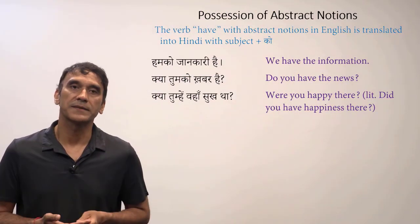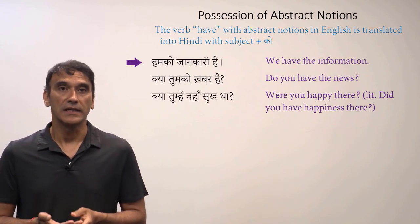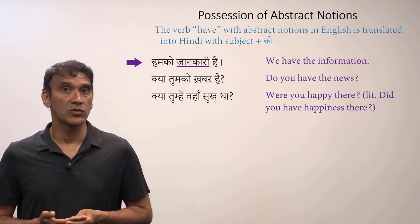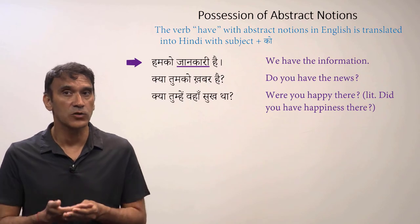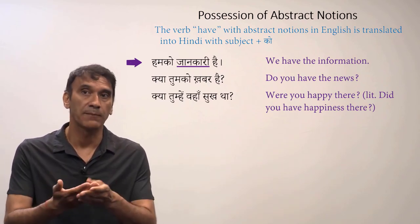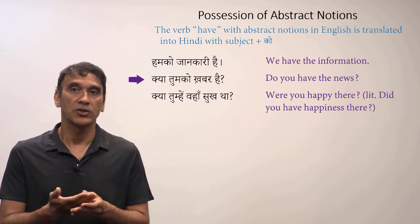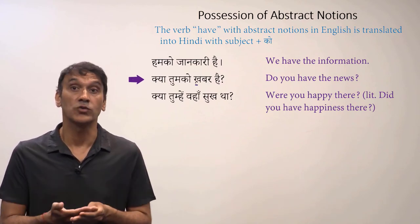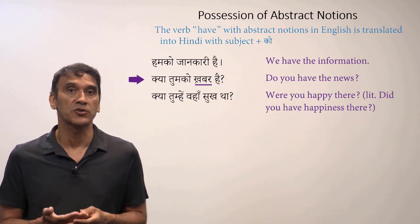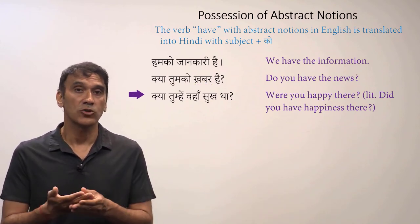Here are some examples. 'Humko jankari hai' — we have the information. 'Jankari' means information and it is an abstract noun, so the subject goes with the postposition 'ko': 'humko.' 'Kya tumko khabar hai?' — do you have the news? Again, 'khabar' (news) is an abstract noun, so the subject takes the postposition 'ko': 'tumko.'